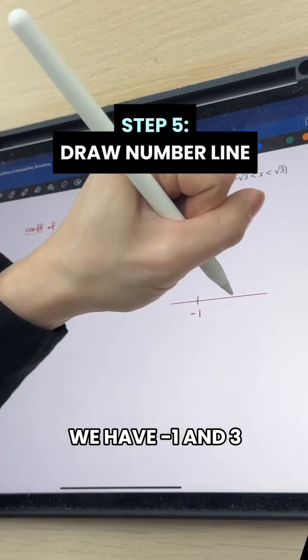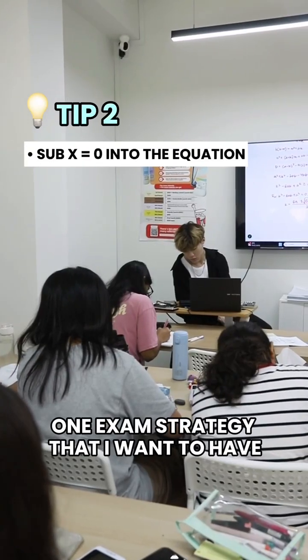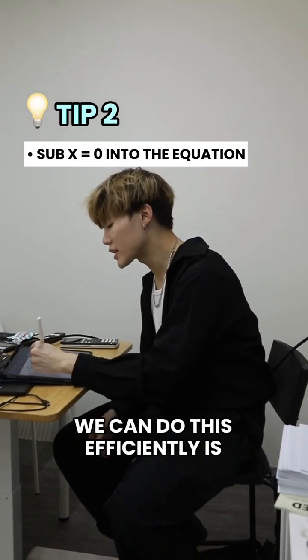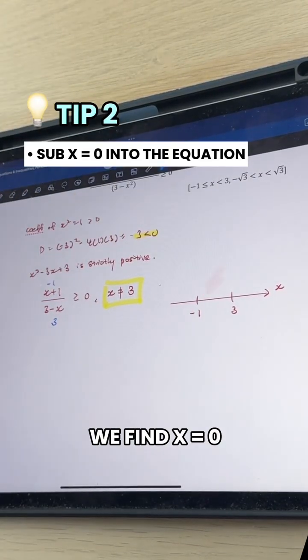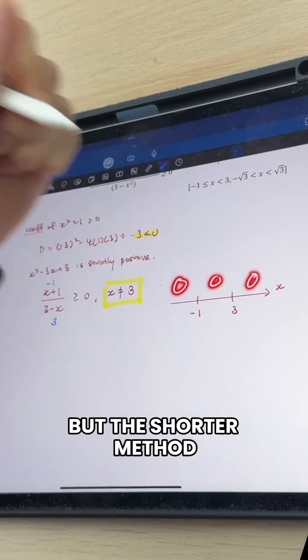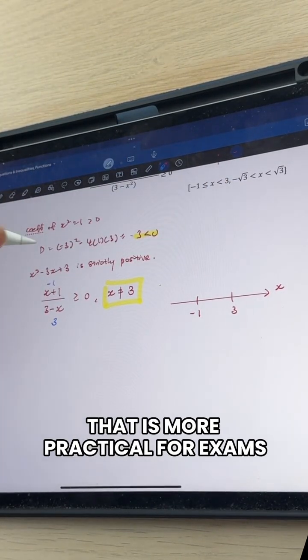Now let's draw the number line. We have minus 1 and 3 as the x values. The next strategy that I want to highlight, how we can do this efficiently, is to sub x equals to zero. So on our number line, we find x equals to zero. The school method is to use a calculator to solve for each region. But the shorter method that is more practical for exams, we can sub x equals to zero.